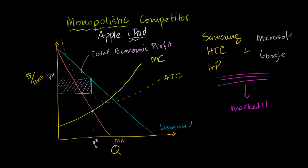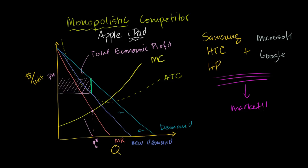At any given price, less will be demanded, so the demand curve will shift to the left. We could end up with a new demand curve that looks something like that — this is our new long-run demand curve, after these competitors have made their products better and marketed heavily. If that's the new long-run demand curve, then our long-run marginal revenue curve is going to have twice the slope of that. Our new marginal revenue curve will look something like that — this is the long-run marginal revenue curve.